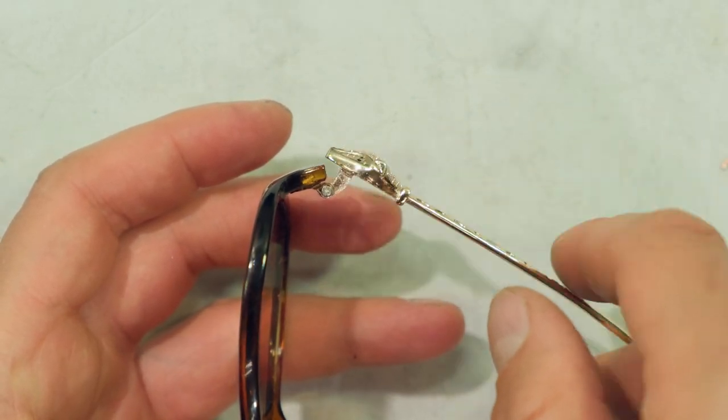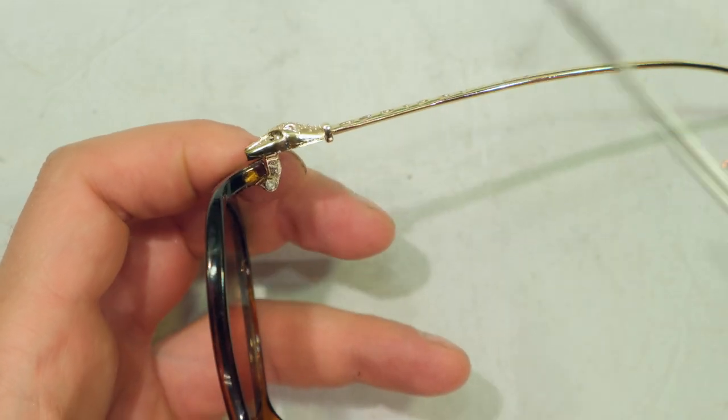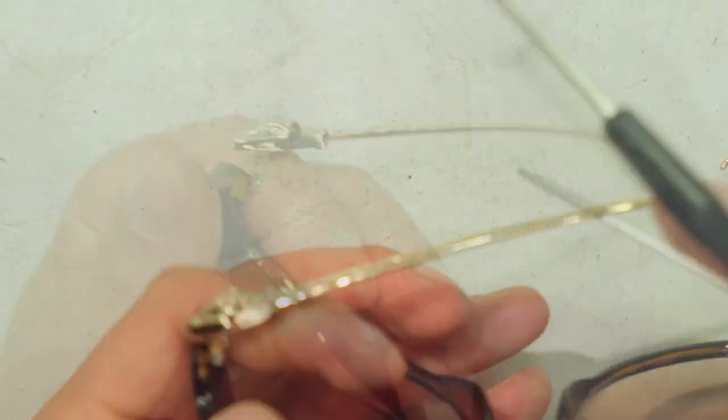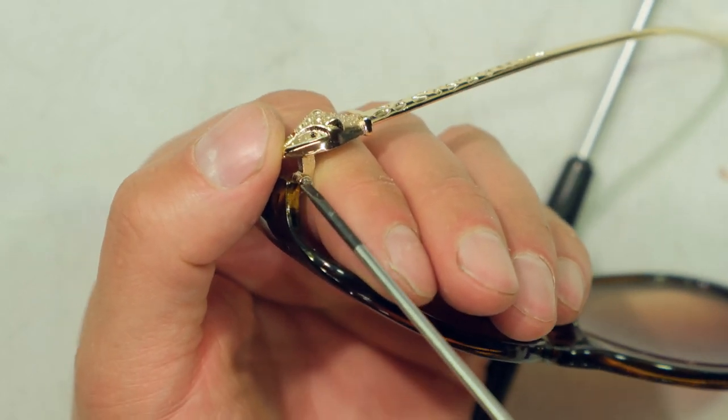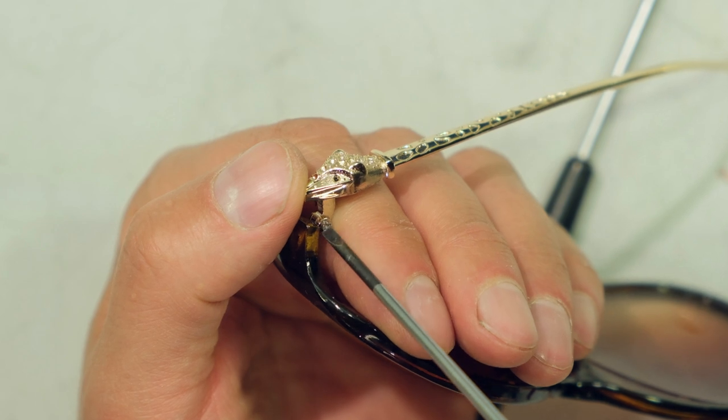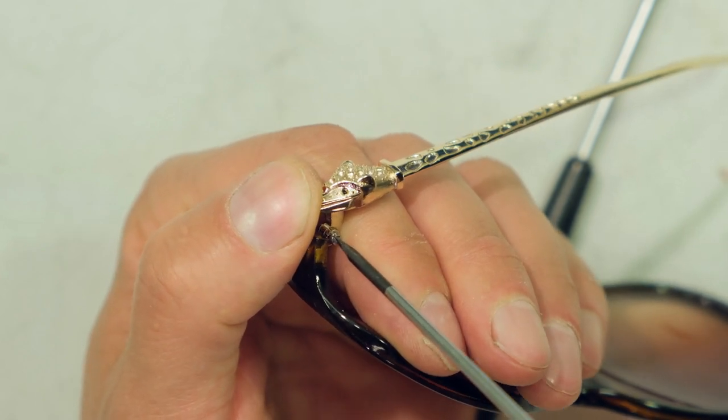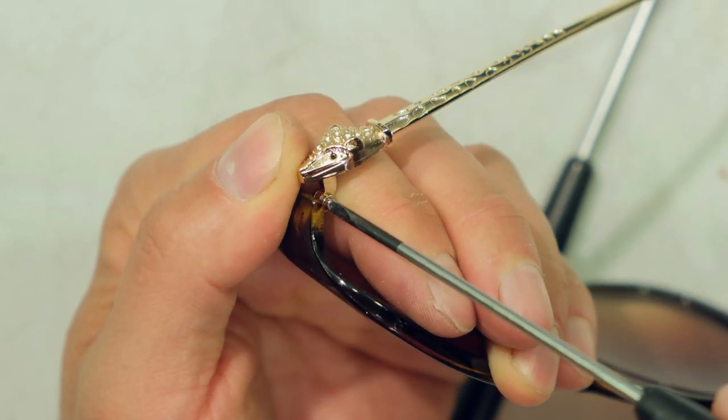Now in this case, you can see how loose it is. And what I'm going to do is I'm going to take a flat screwdriver. I put my hand over the lens just in case, so if I miss the screw and I go past it, I won't scratch the lens.